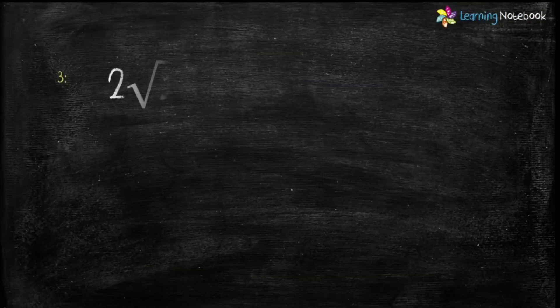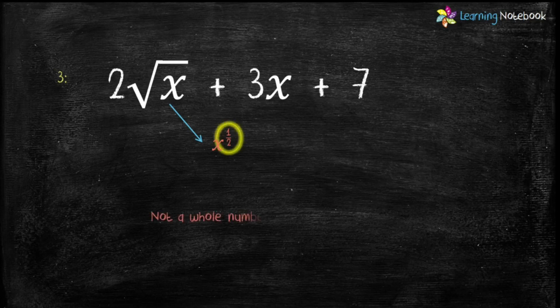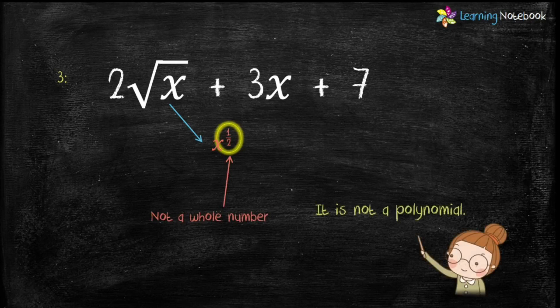The last algebraic expression is 2 under root x plus 3x plus 7. The variable is x. The first term, 2 under root x, can be written as x raised to the power 1 by 2. The power of x is 1 by 2, which is not a whole number. Therefore, we do not need to check more terms — this is not a polynomial.